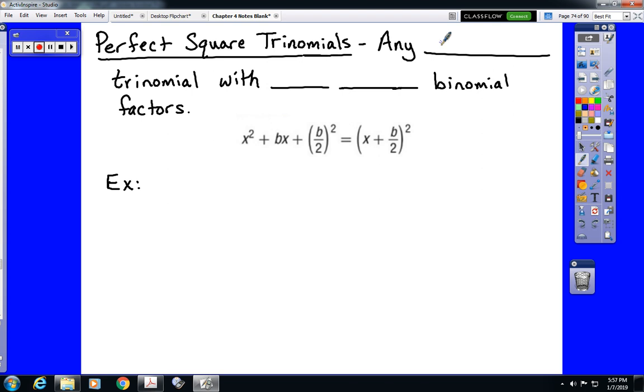A perfect square trinomial is any factorable trinomial, and actually that term is very loosely applied in completing the square, with two identical binomial factors.